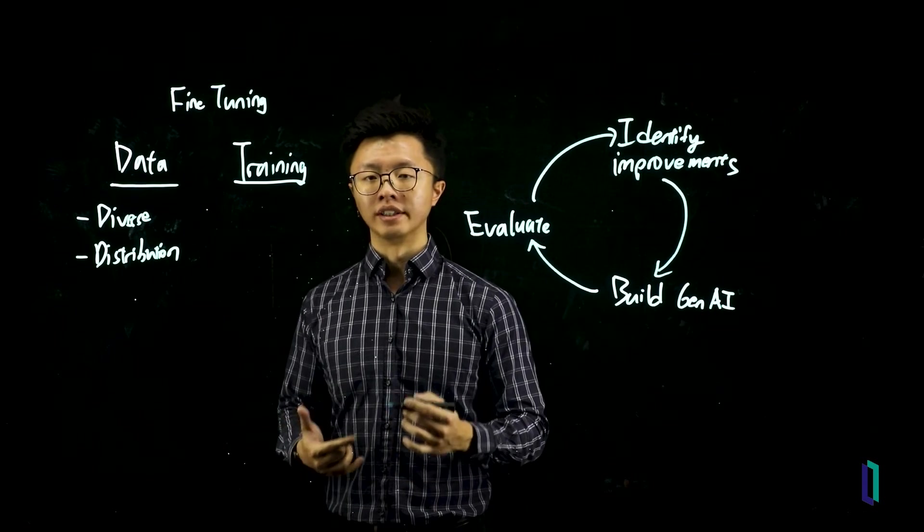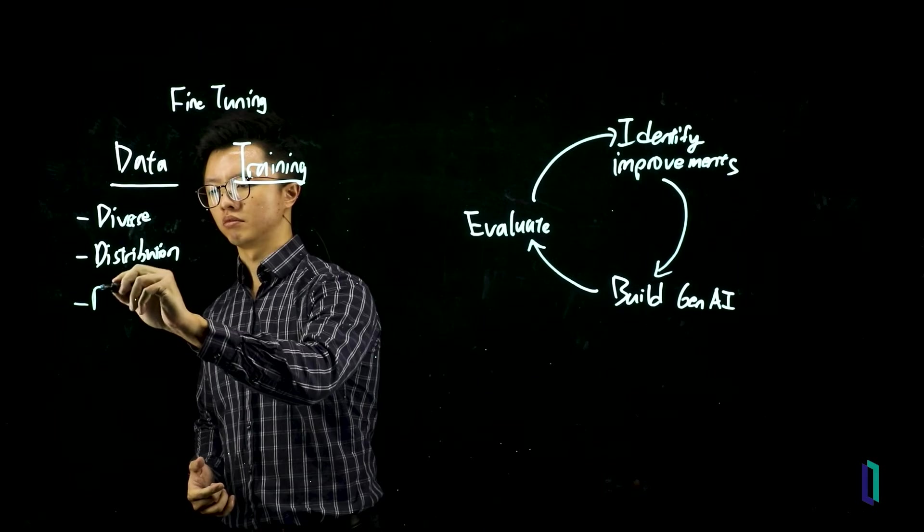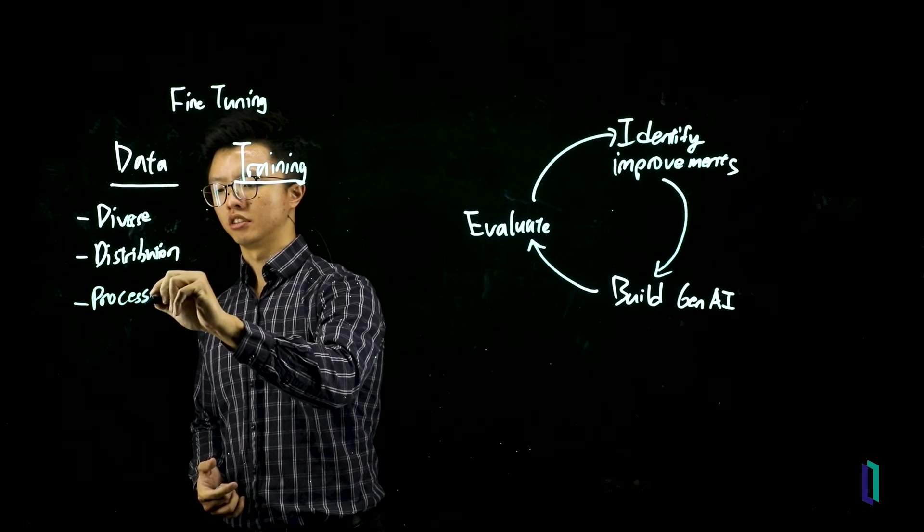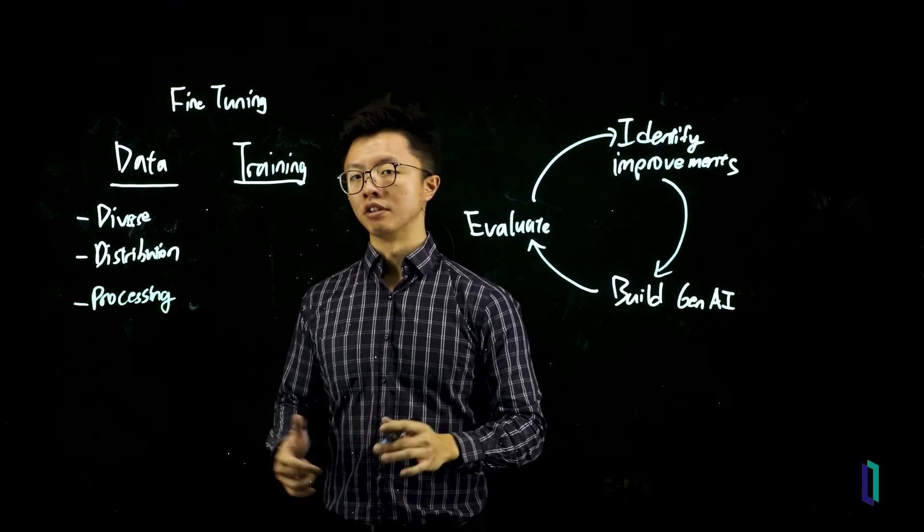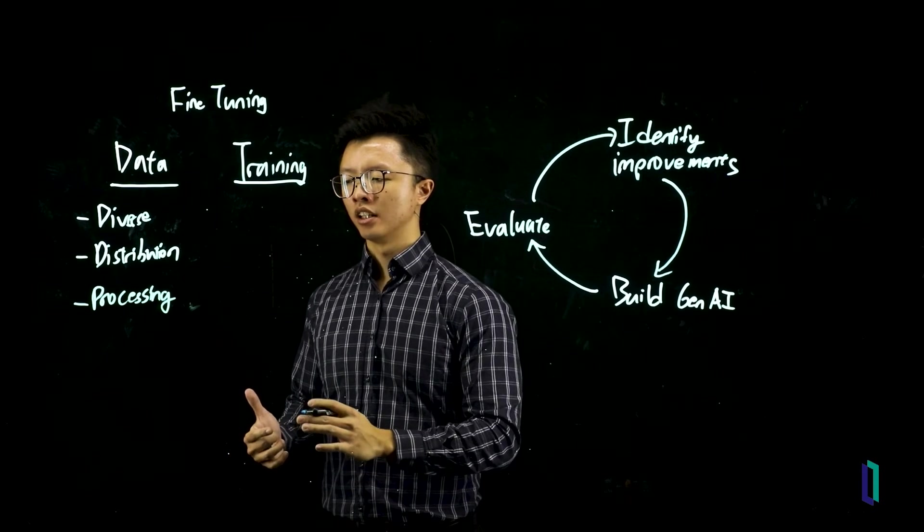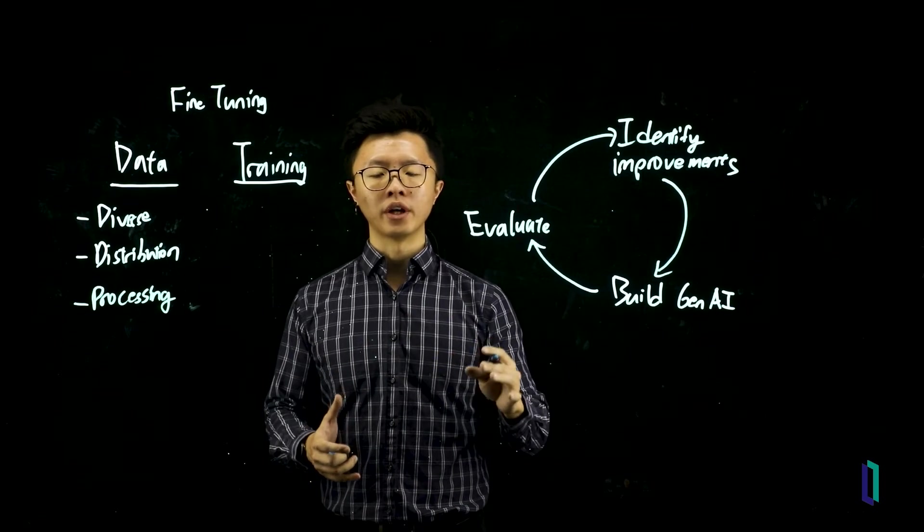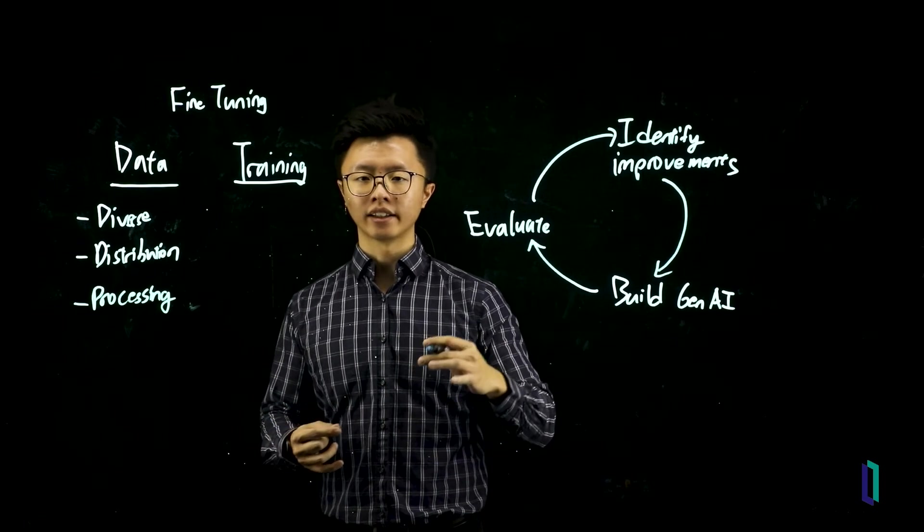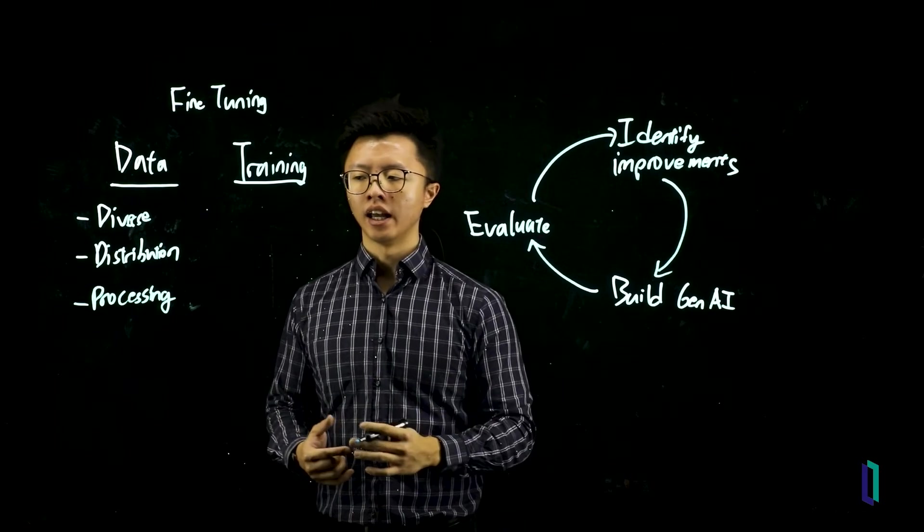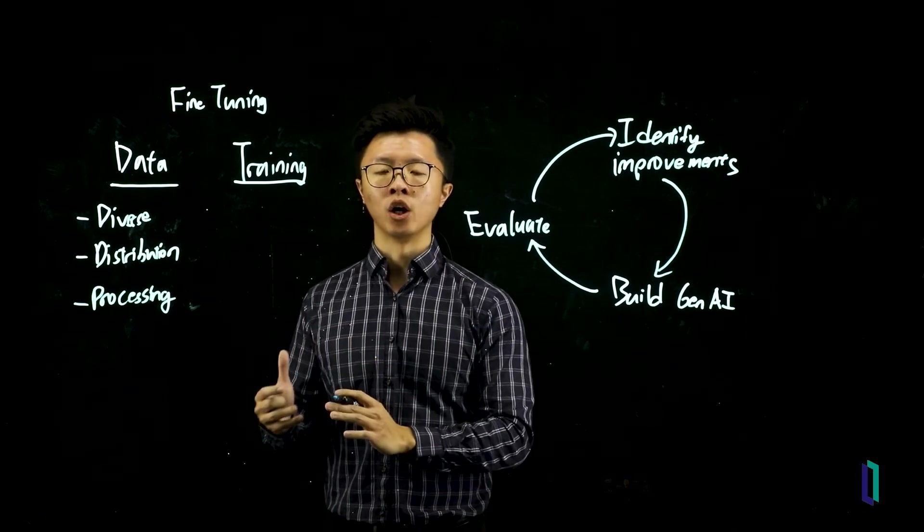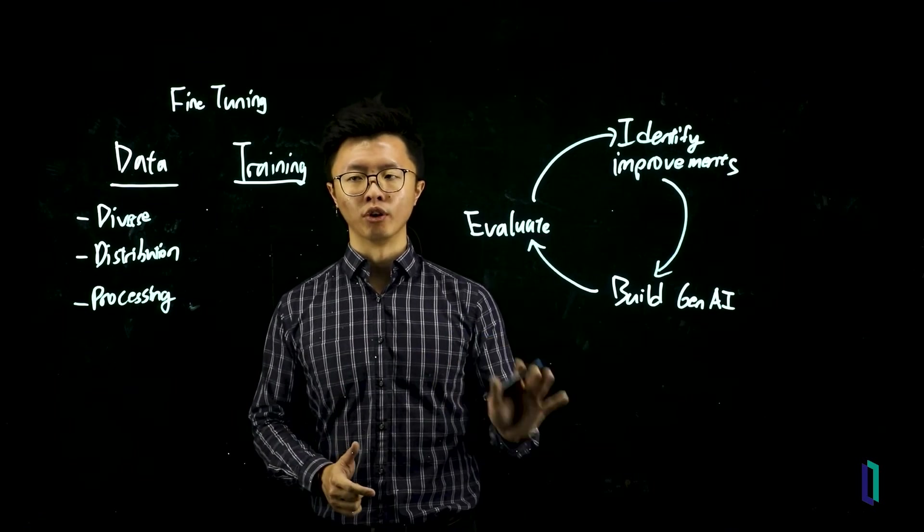Another thing to note about the data that you're using for fine tuning is how you're processing it. Ideally, your data should be very clean. And the way you process your data also includes how you add in your tokens to it. And that includes things like your end of sentence tokens, which determines how it stops. And there are a couple other tokens depending on how you fine tune it. So that will also influence how your model performs.